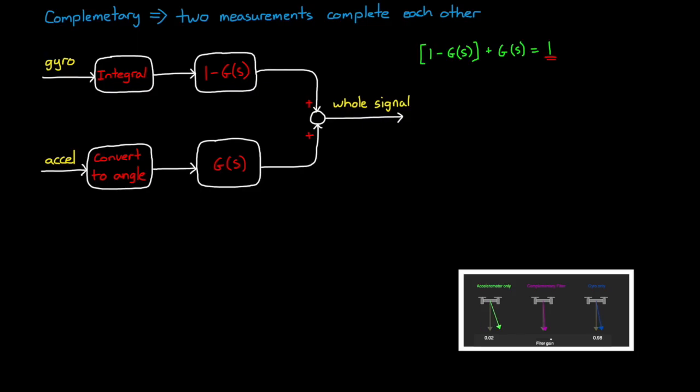This is the basic complementary filter. And G of S can be any filter you want, like a notch filter or something. And 1 minus G of S will be its complement. However, more often than not they are just the standard low pass and high pass filter.